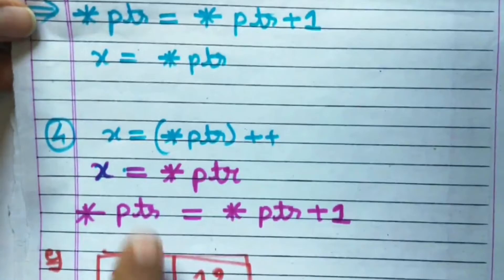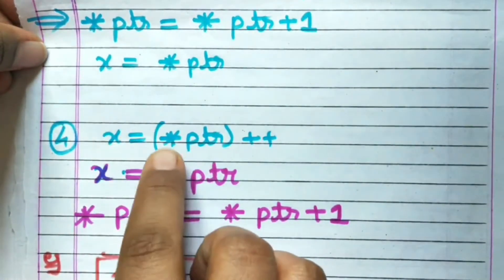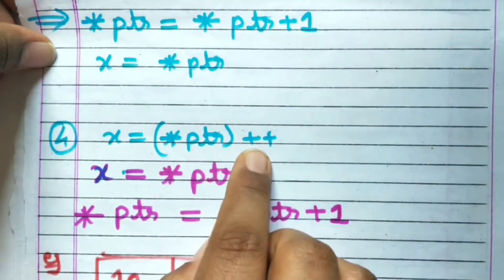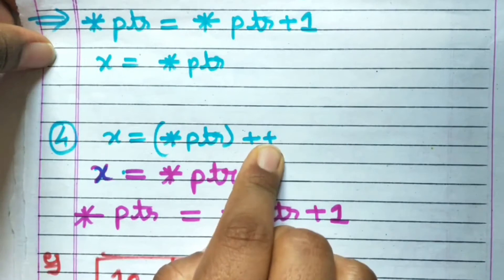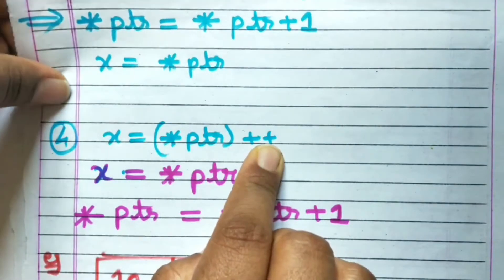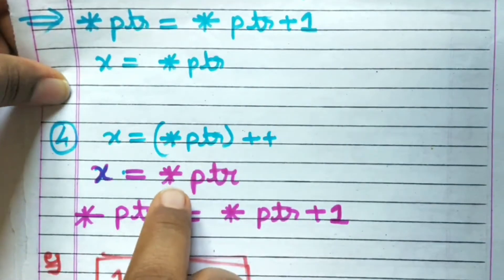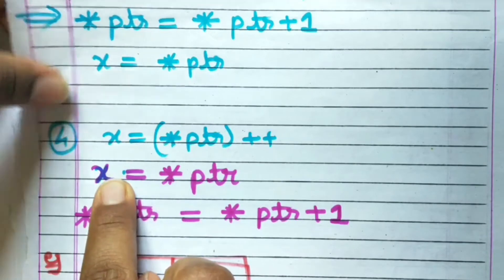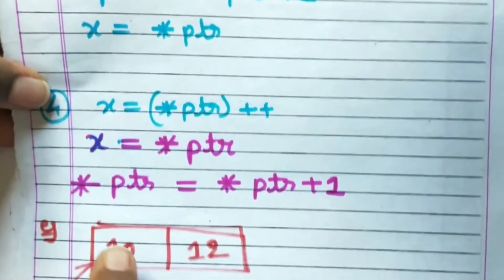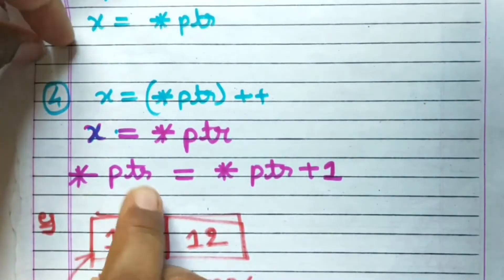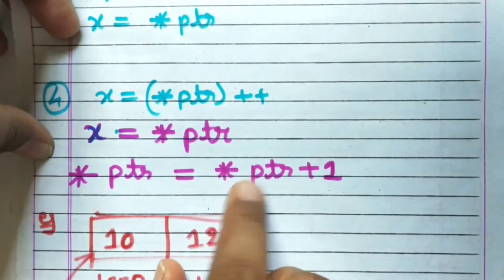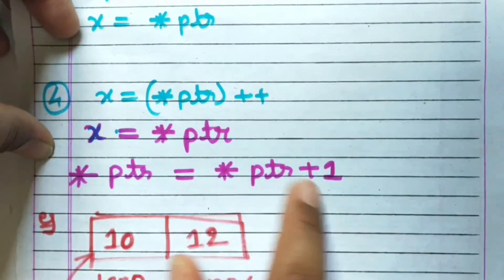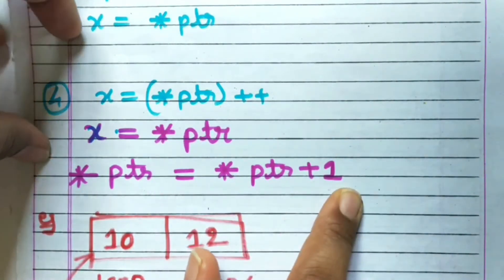Next is x = (*ptr)++. Since this is a post-increment operation, the value pointed by PTR will first be assigned to x, and then the value pointed by PTR will be incremented by 1 — that is: *PTR = *PTR + 1.